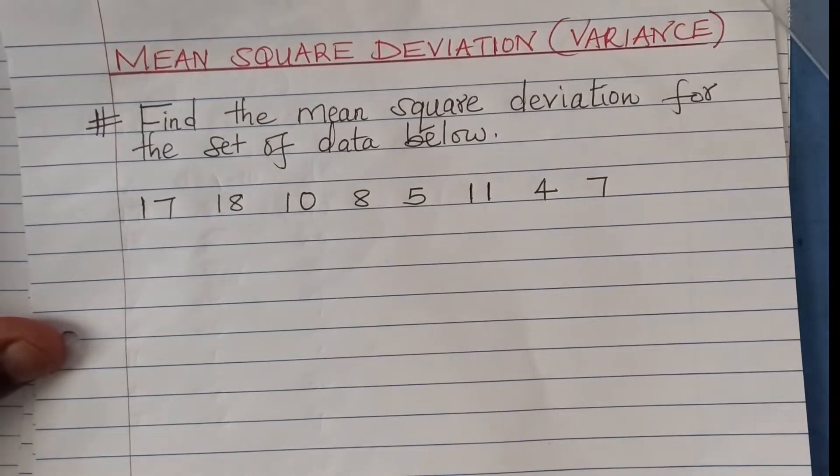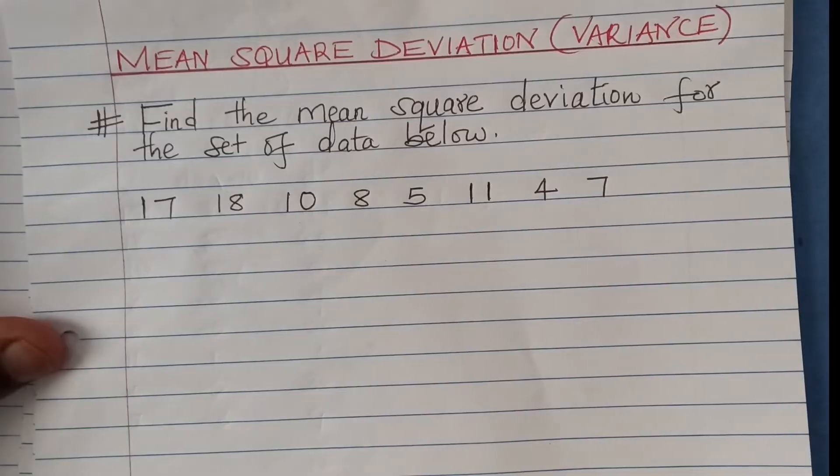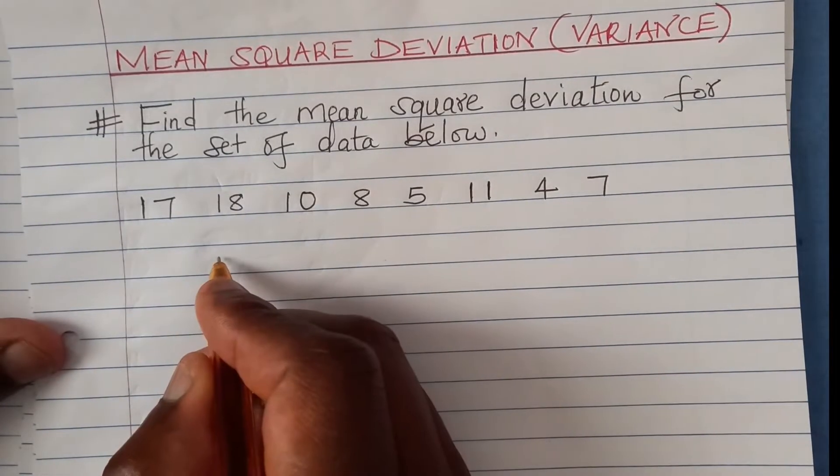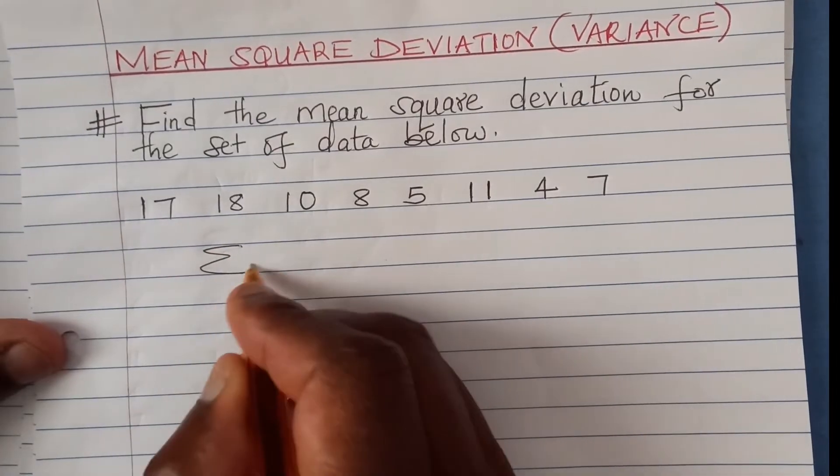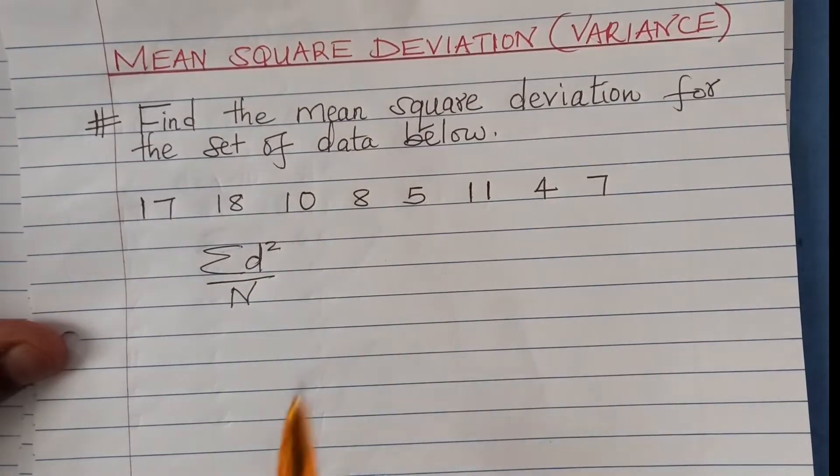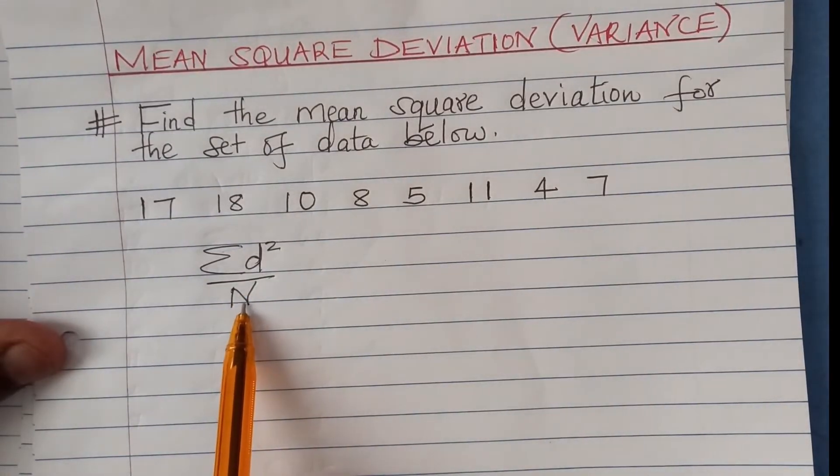Begin with, you need to understand how you get the mean square deviation or the variance of ungrouped data. And this is how you get it. This is the formula. We get it by getting the summation of deviation squared divided by n, which is total frequency, or the number of values.